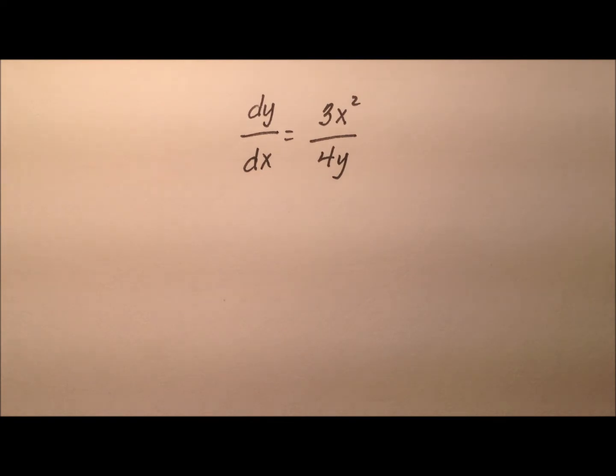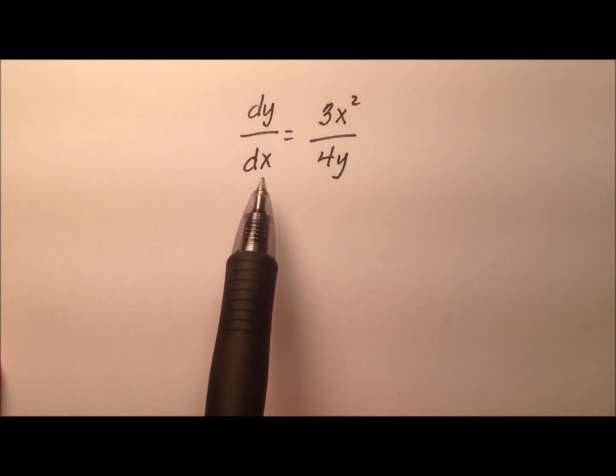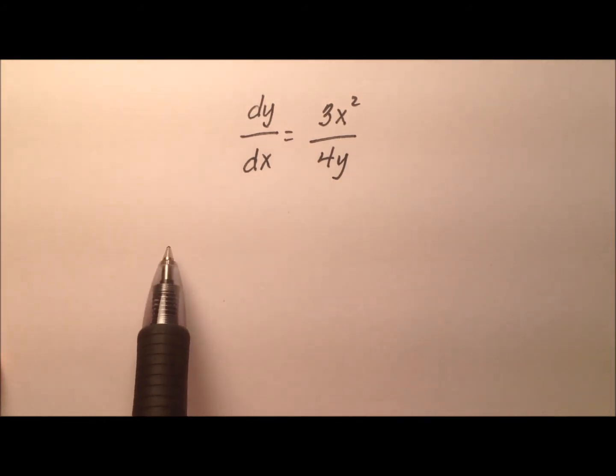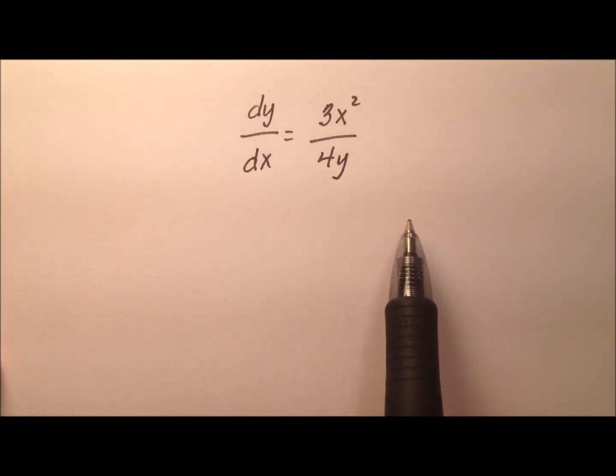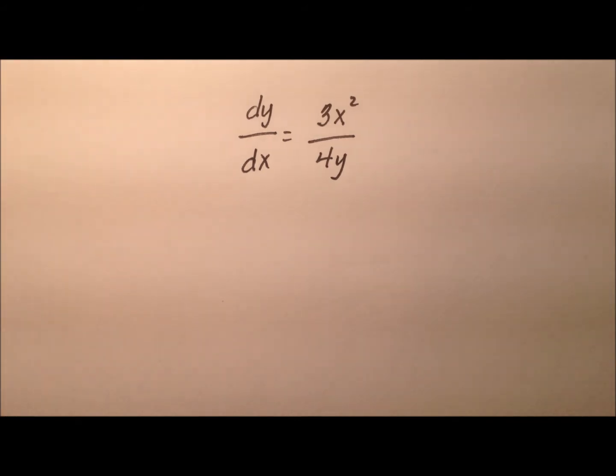Here's our first example: dy/dx equals 3x² over 4y. This is a pretty basic example of our separable differential equations. Because remember to be separable, I need to be able to get my y terms with my dy on one side of the equation with my x terms and my dx on the other side of the equation. So then I can integrate both sides of the equation and ultimately solve for y, hopefully, and write it in explicit form.